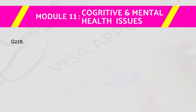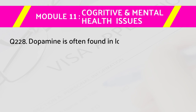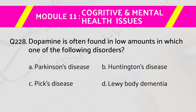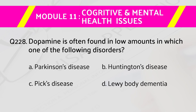Question number 228: Dopamine is often found in low amounts in which one of the following disorders? Answers are: a) Parkinson's disease, b) Huntington's disease, c) Pick's disease, d) Lewy body dementia. The right answer is a) Parkinson's disease.